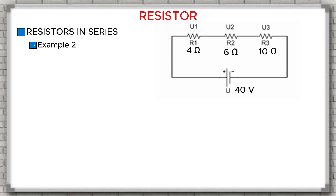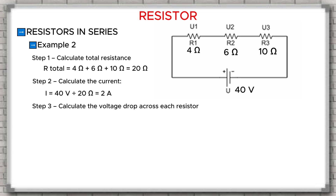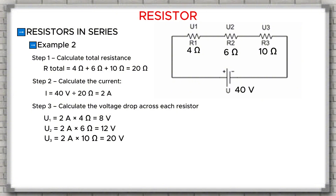Example 2: Resistors R1 equals 4 ohms, R2 equals 6 ohms, R3 equals 10 ohms. Power supply: 40 volts. Step 1 — calculate the total resistance: R total equals 4 plus 6 plus 10 equals 20 ohms. Step 2 — calculate the current: I equals 40 volts divided by 20 ohms equals 2 amperes. Step 3 — calculate the voltage drop across each resistor: U1 equals 2A times 4Ω equals 8 volts; U2 equals 2A times 6Ω equals 12 volts; U3 equals 2A times 10Ω equals 20 volts. Conclusion: R3 has a resistance value that is twice as large as R2, so the voltage drop across it is also twice as high as the voltage drop across R2.